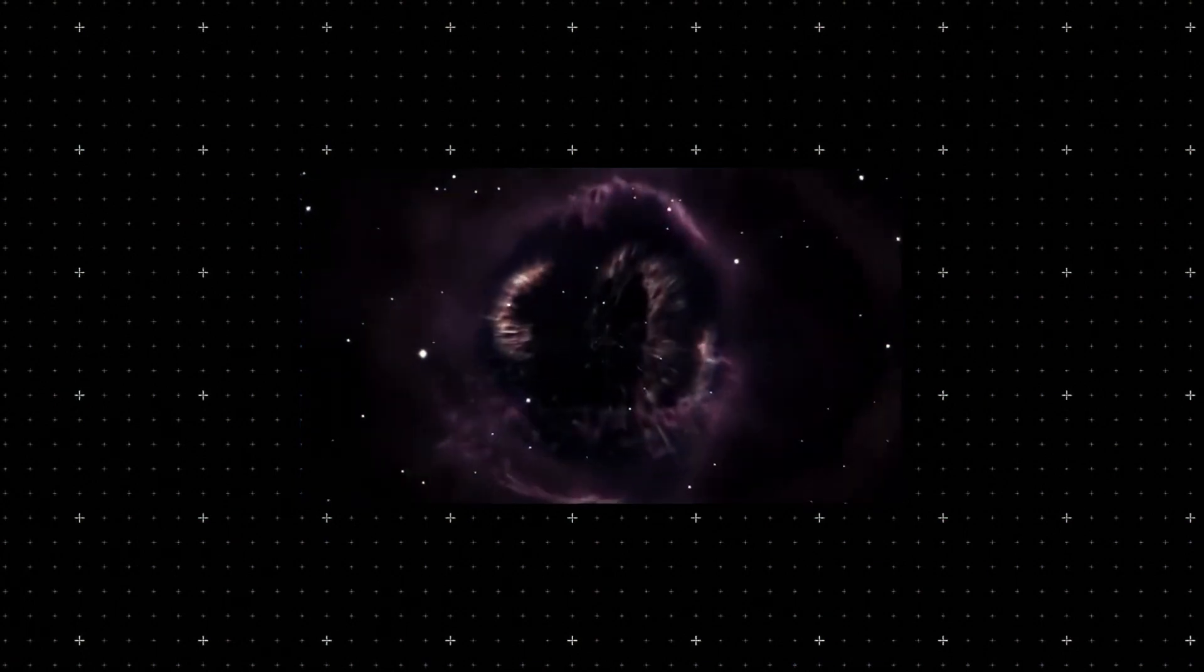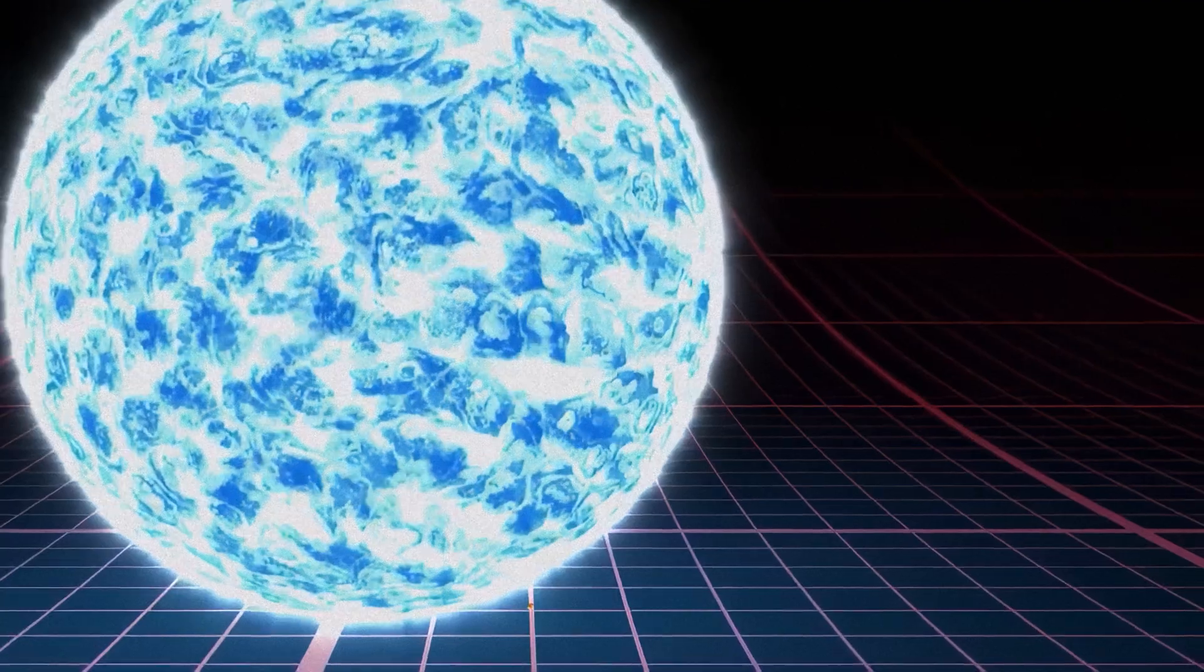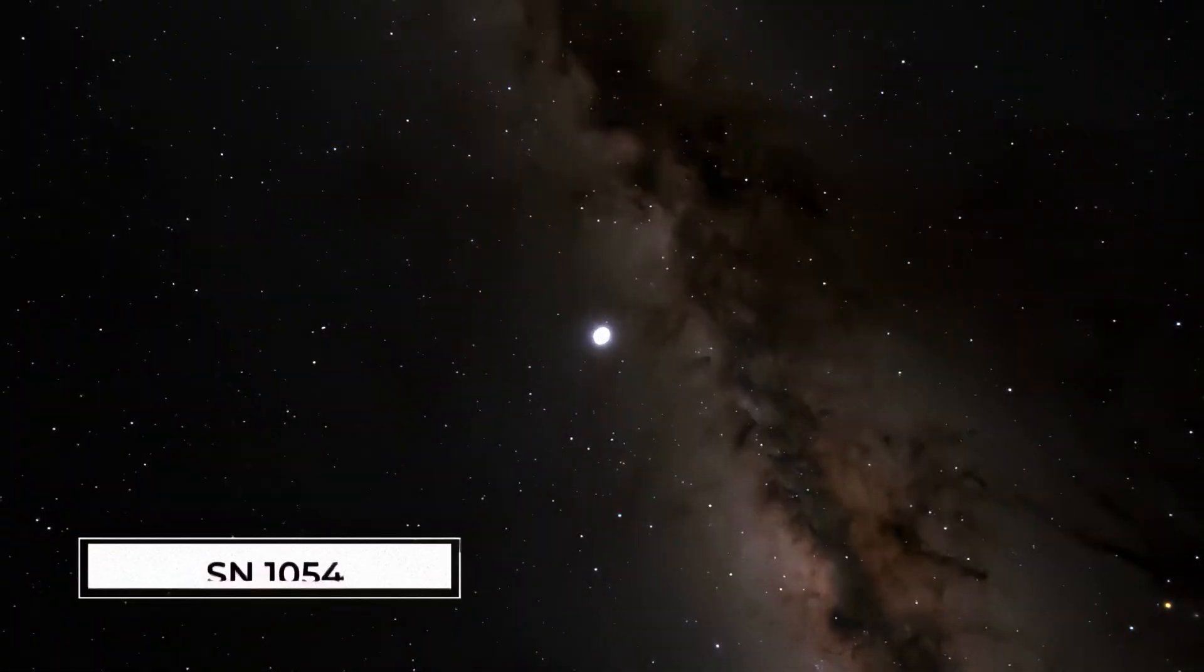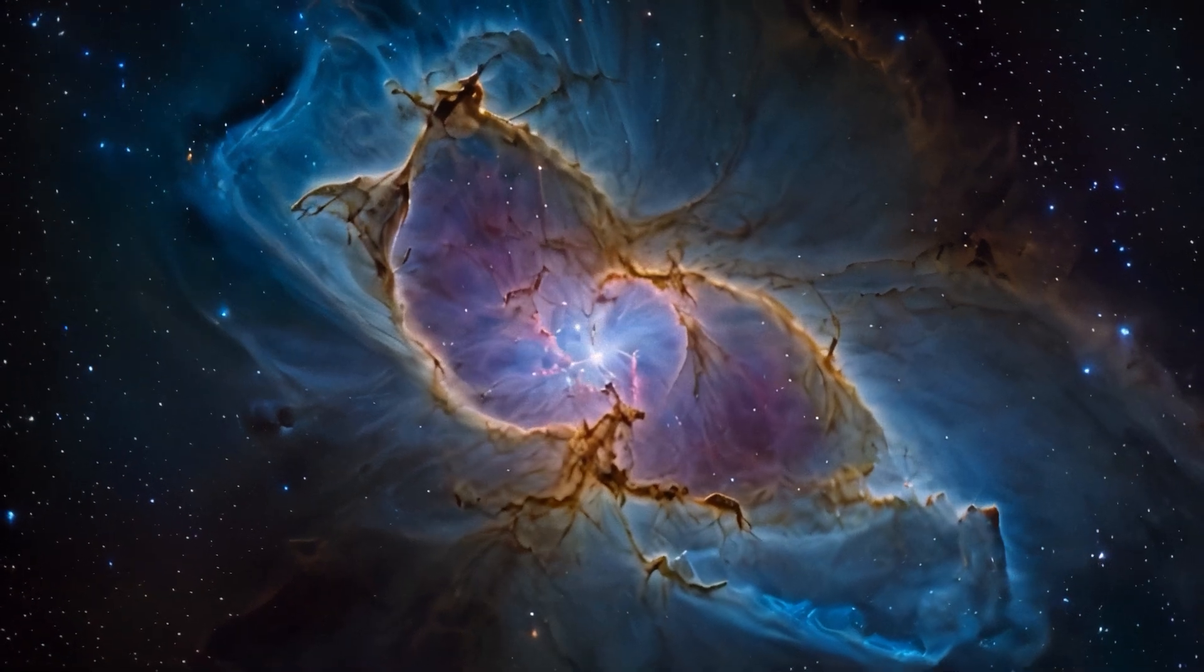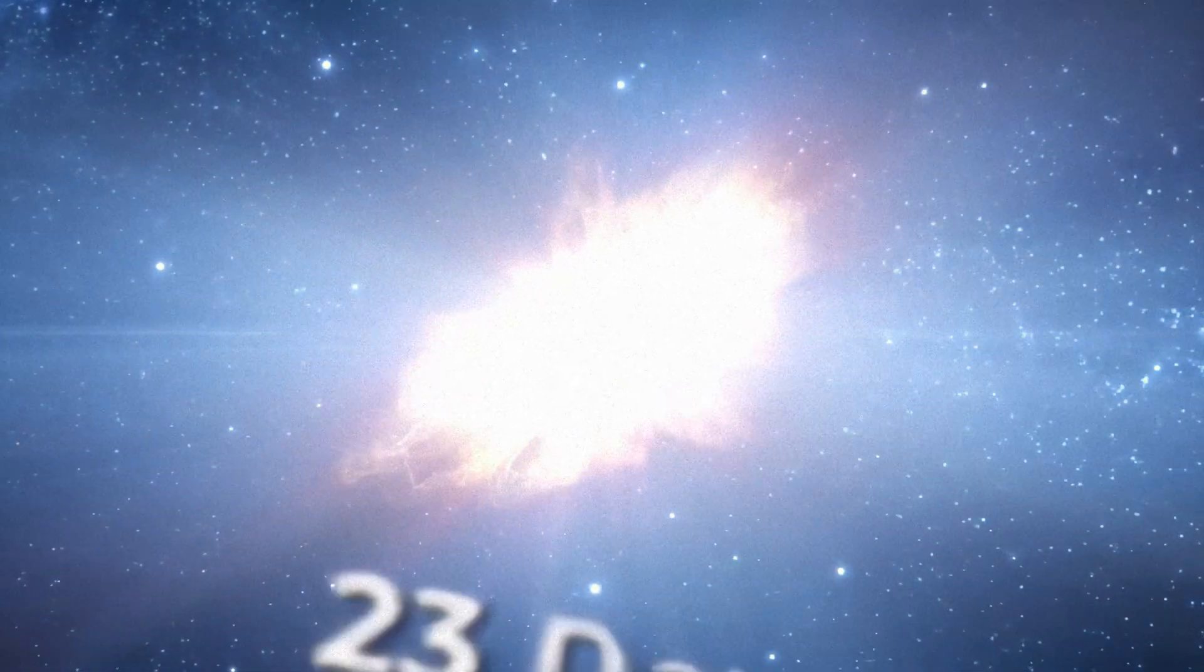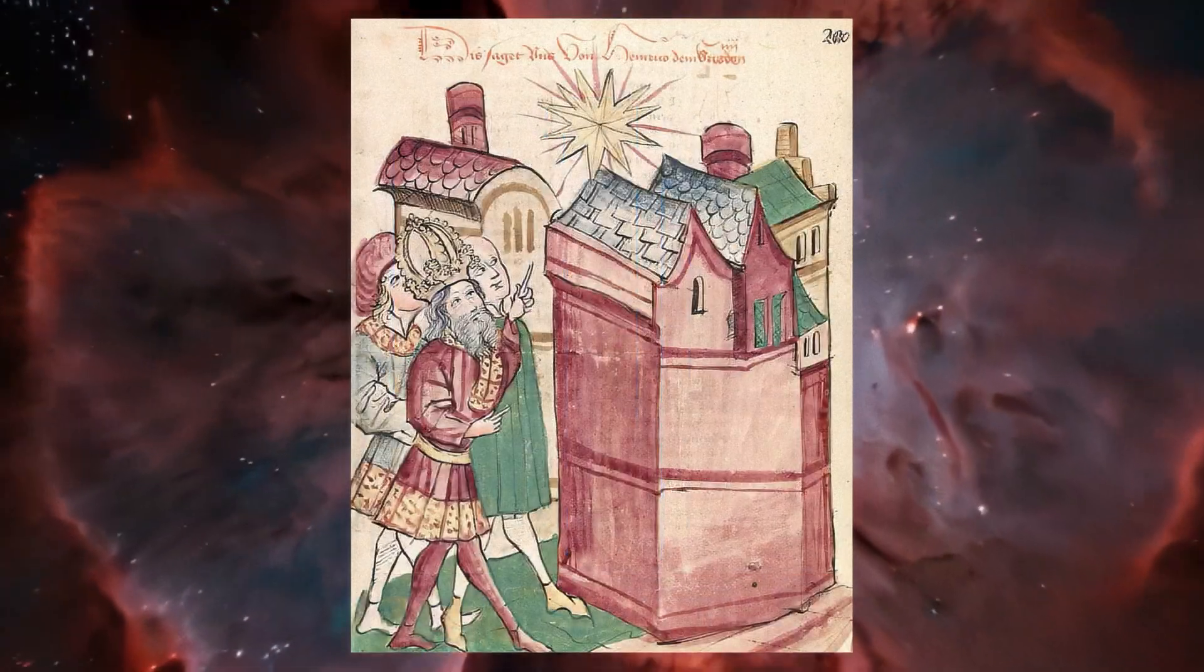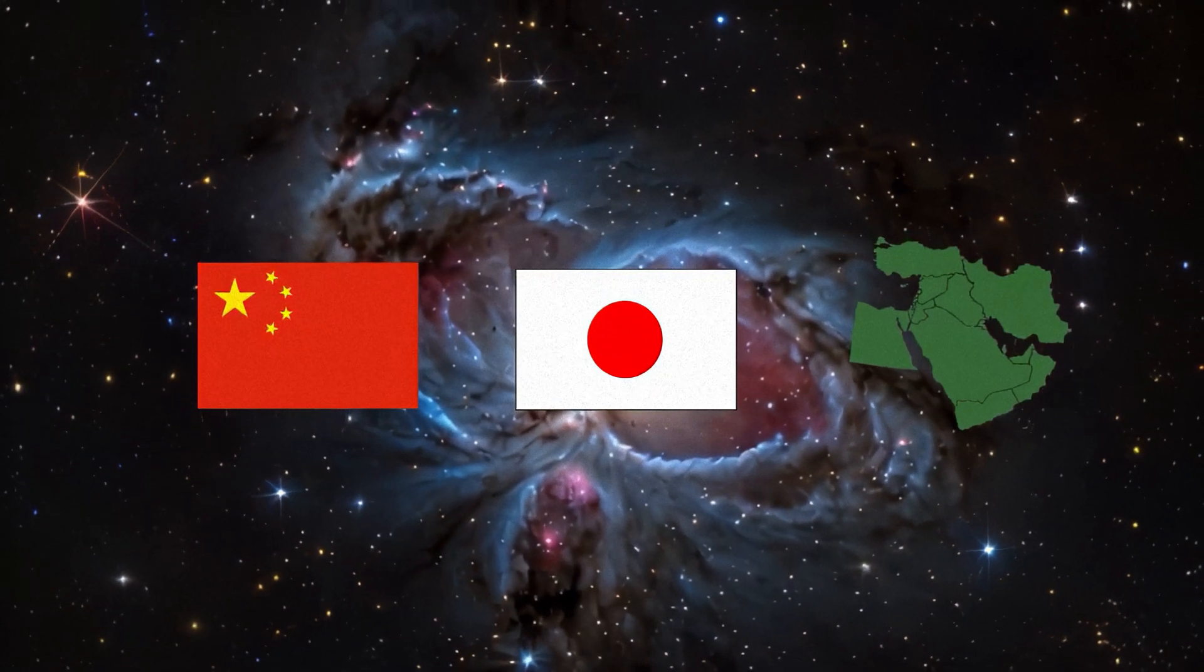A supernova explosion has always been a rare and significant event in the history of astronomy. By comparing the upcoming event with previous significant supernovae, we can better understand its uniqueness and importance. One of the most famous supernovae is SN1054, which gave rise to the Crab Nebula. This explosion was visible during daylight for 23 days and left a bright trace in historical records from China, Japan, and the Middle East.